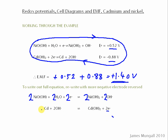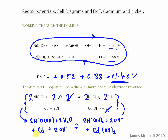To write out the full equation, I take all the species on the left-hand sides of both half equations onto the left, and all the species on the right-hand sides onto the right, and the electrons cancel out. Also, the two OH⁻ ions cancel as well. So the overall equation has two of the nickel species with two waters, plus cadmium, going to two of the other nickel species with cadmium hydroxide.